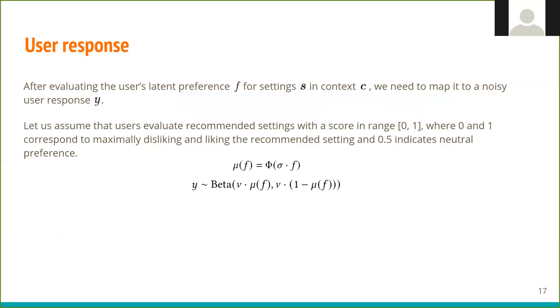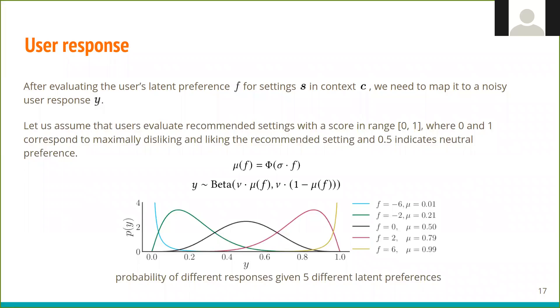We sample user response from beta distribution with mean parameterized by user's latent preference F, and variance V indicating to what extent the user response is noisy. Here we show the shape of the distribution for a few different values of user's latent preference.